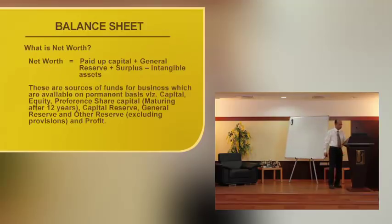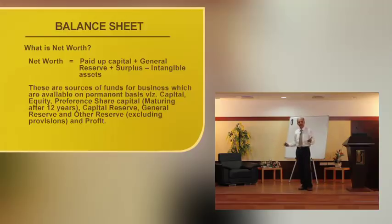Now coming to the next part. Here the balance sheet gives what is the net worth of the unit. What is the net worth? What do you understand by net worth? It is nothing but the capital plus free reserves minus intangible assets. It is the source of funds for the business which are available on a permanent basis. Capital that includes equity capital, preference capital that is maturing after 12 years, capital reserve, general reserve and other reserves that is excluding provisions and profits.